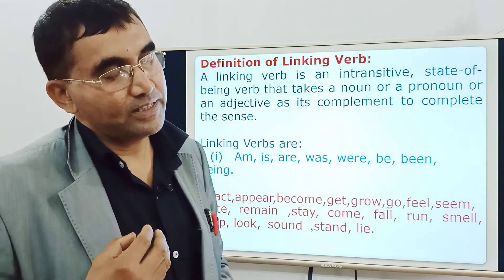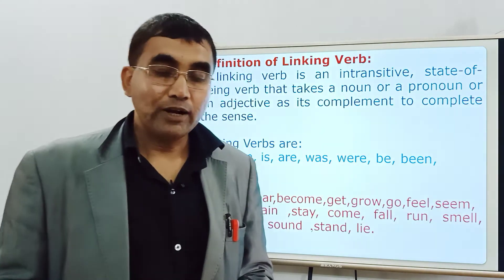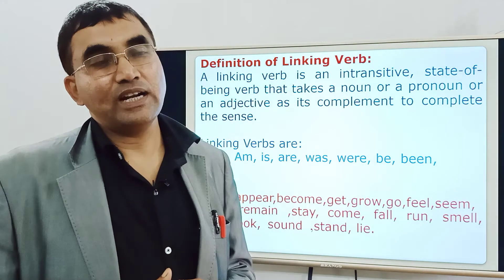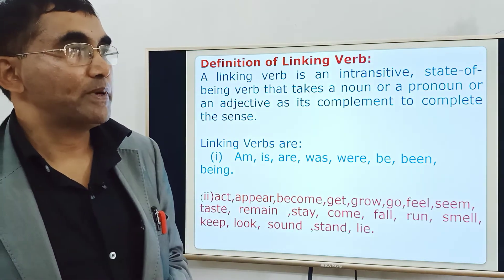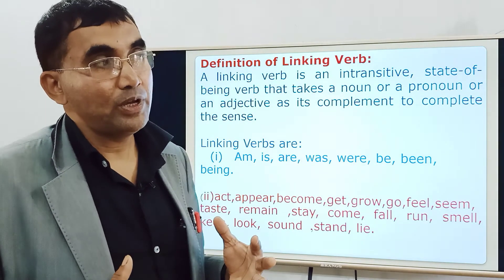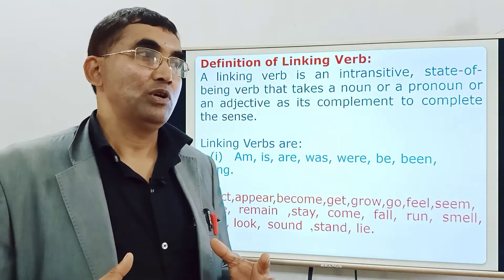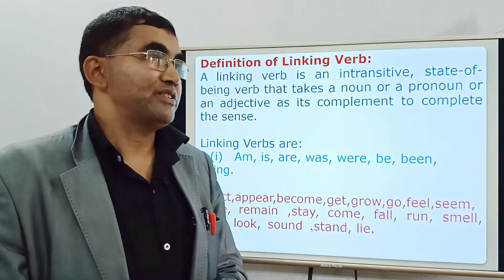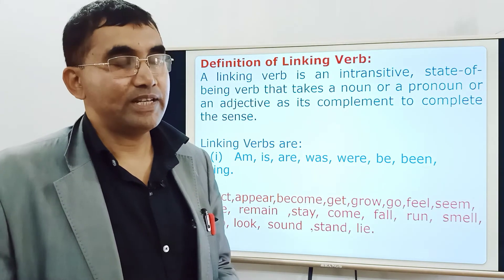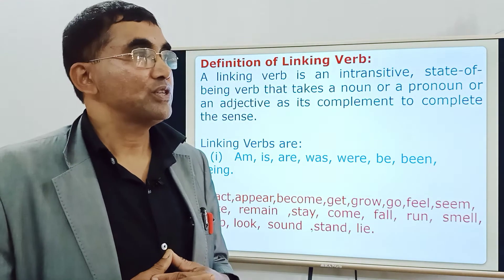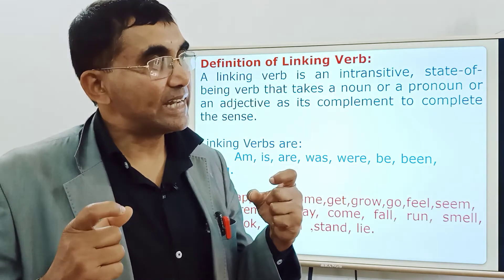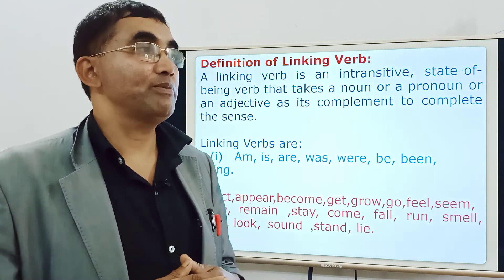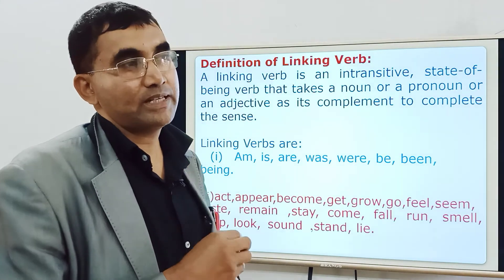A complement is a word that helps the subject of a sentence clarify the meaning. For example, 'the boy is Rohim' — if we just say 'the boy is,' it is not a complete sentence. Compare this with 'birds fly,' which is complete because 'fly' is an intransitive verb and no complement is needed. But 'the boy is' has some lacking — we want to know more about the boy. So 'Rohim' is the complement here, helping the subject clarify the meaning.